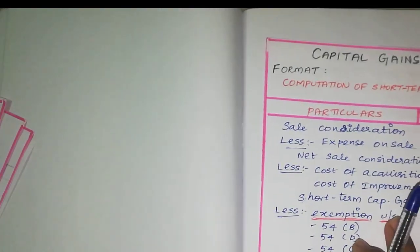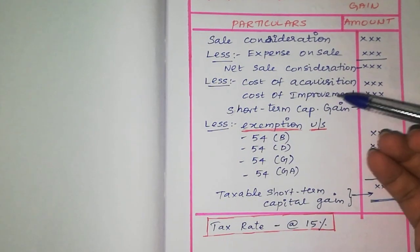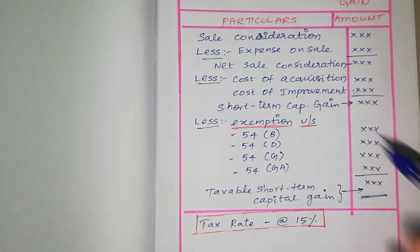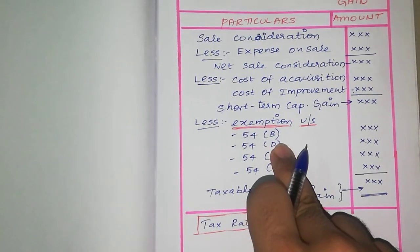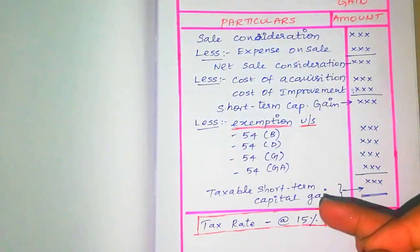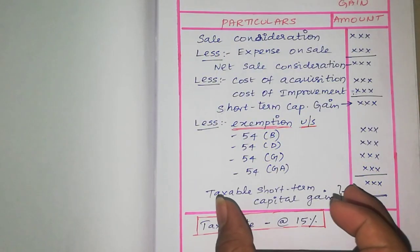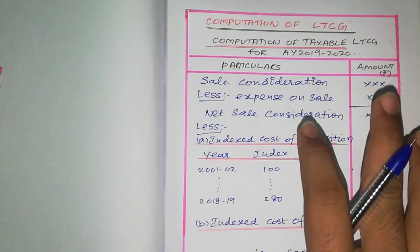The Cost of Acquisition is the amount paid to purchase the asset. Next, Cost of Improvement. After deducting these, we get the taxable capital gains amount. We will then claim exemptions under applicable sections. Exemption is deducted, giving taxable capital gains. A tax rate of 15% will be charged on taxable short term capital gains.